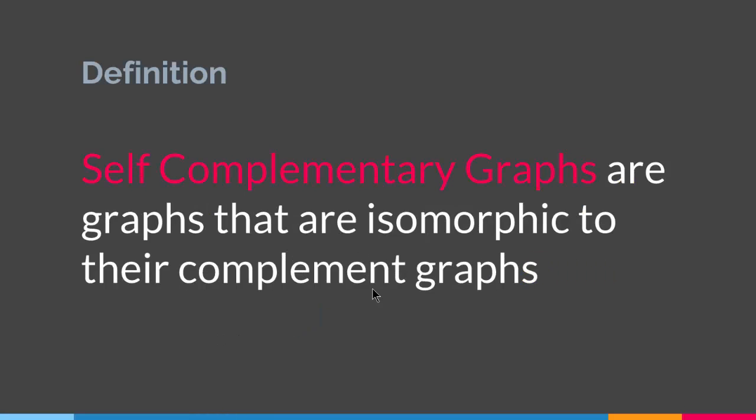We'll end the lecture with something called self-complementary graphs. Self-complementary graphs are graphs that are isomorphic to their complement graphs. We talked about graph isomorphism in the previous lecture. So self-complementary graphs are those graphs that are isomorphic to their complementary graph.